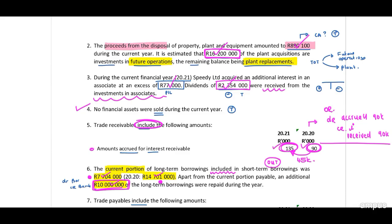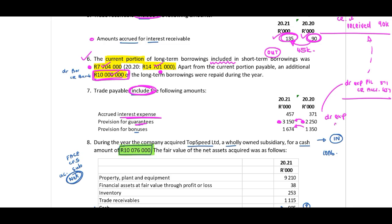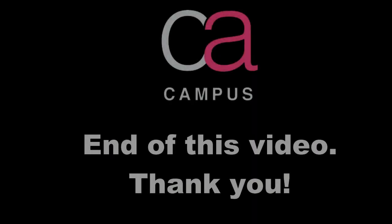Note seven: trade payables include the following amounts — accrued interest expense. Thinking about the journal: debit the expense in profit and loss, credit the creditor (accrued interest) with 371 and 457, exactly as per the previous discussion but in reverse. Provision for guarantees: opening balance 2,250, closing balance 3,150. To get from opening to closing balance we debit the expense and credit the provision with the movement. We need to take this into account in our trade and other payables T-account.